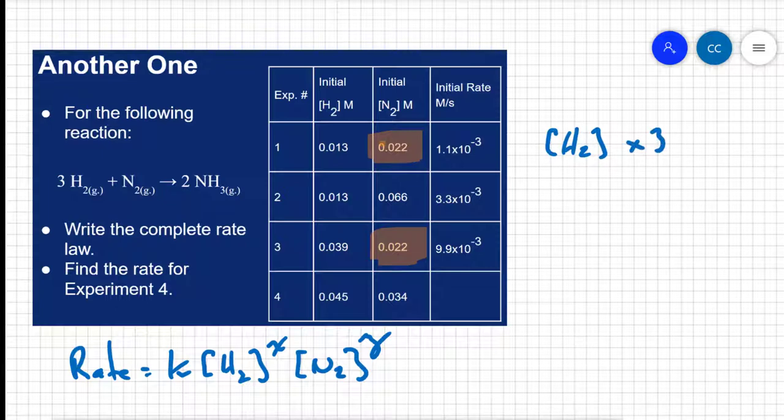Well, my rate is going from 1.1 times 10 to the negative 3 to 9.9 times 10 to the negative 3. So my rate is going up by a factor of 9. So the question is, 3 to what power equals 9? And by doing that, we now know that hydrogen is a second order reactant.